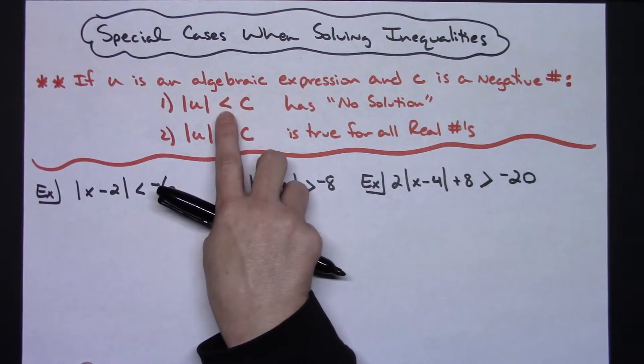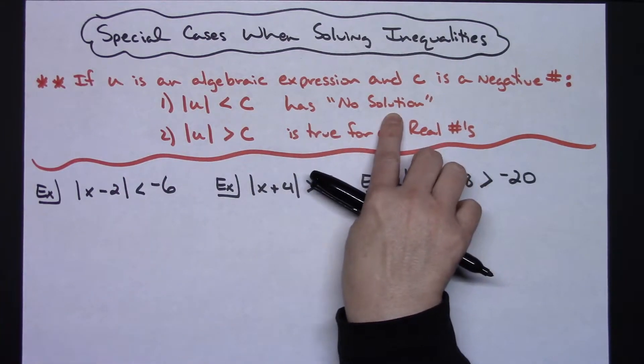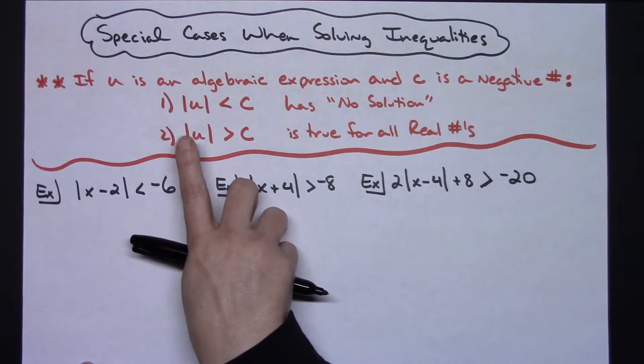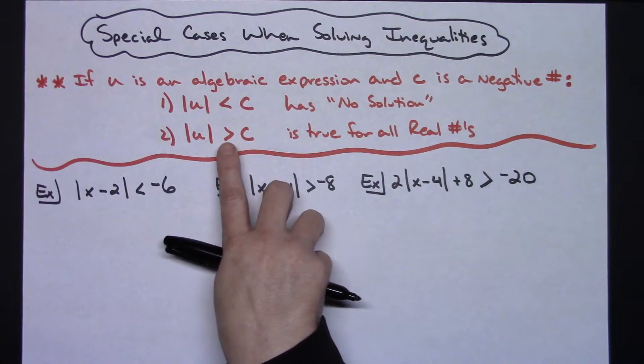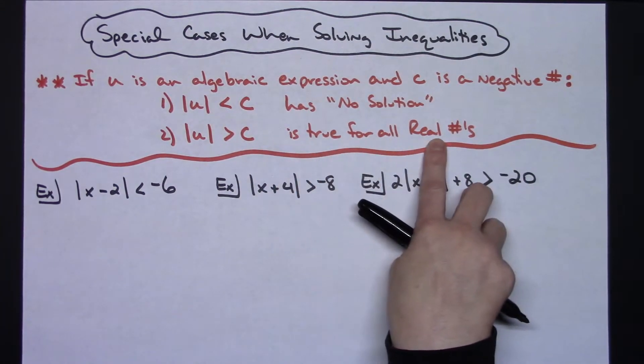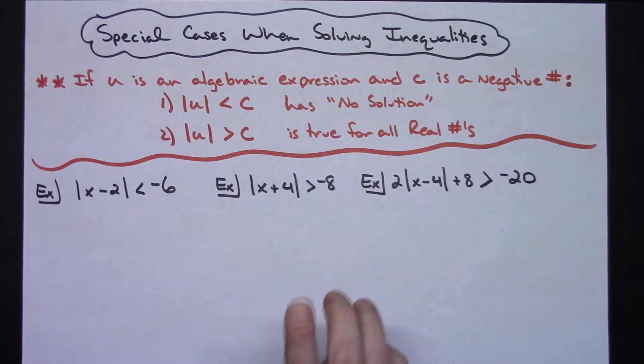Then we know automatically that we have no solution. So as long as you memorize that rule, it's going to make it very quick. On the second part, if we have the absolute value of an algebraic expression and it turns out to be greater than a negative number, then it's going to be true for all real numbers. So all real numbers is going to be your solution.